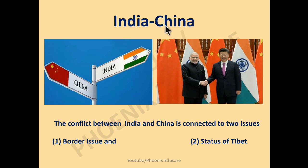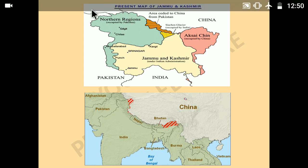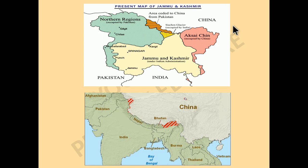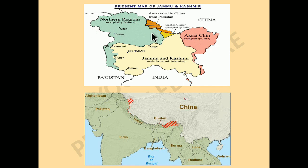Next, we will talk about India-China relations. There are two most important issues: first, the border issue between India and China; and second, the status of Tibet. Looking at the Kashmir map — India claims the entire Kashmir as its own. However, in reality, the green shaded region is today under Pakistan's control. The pink/red colored region is under China's control.